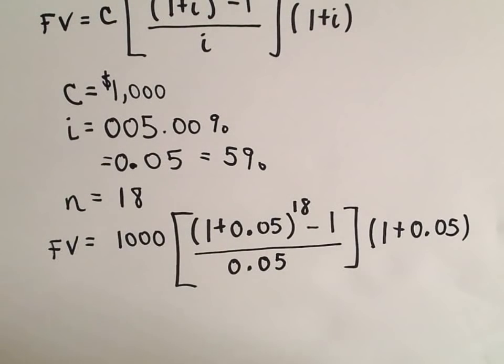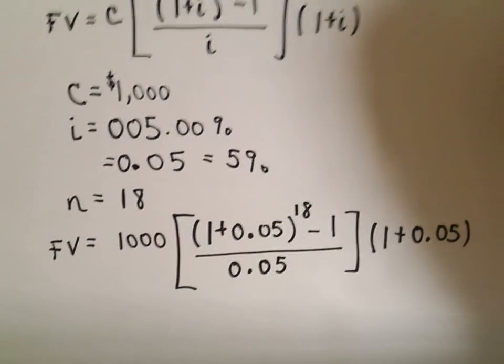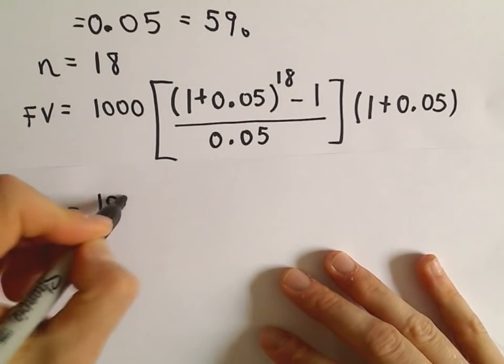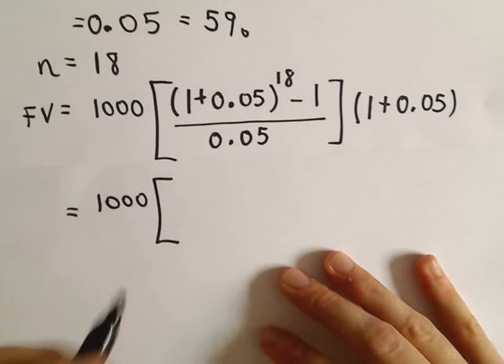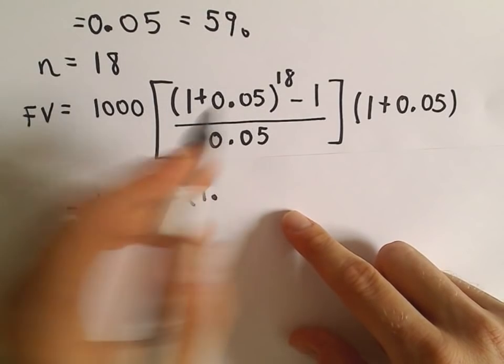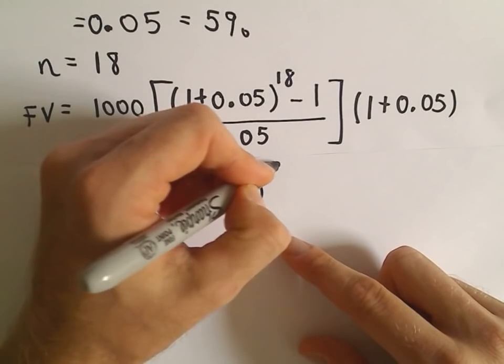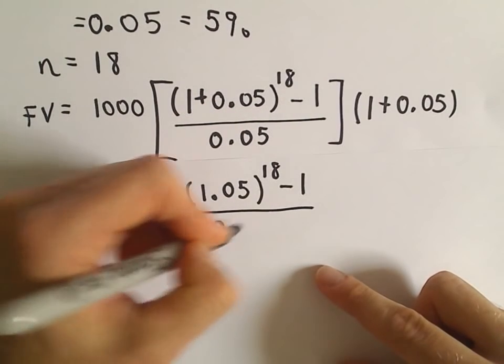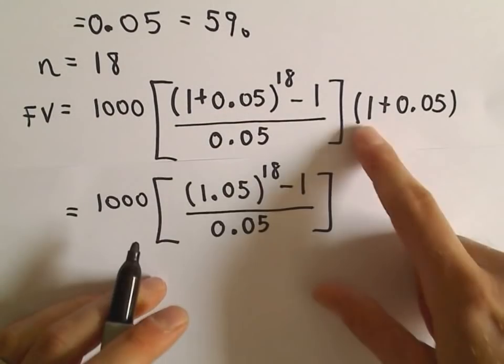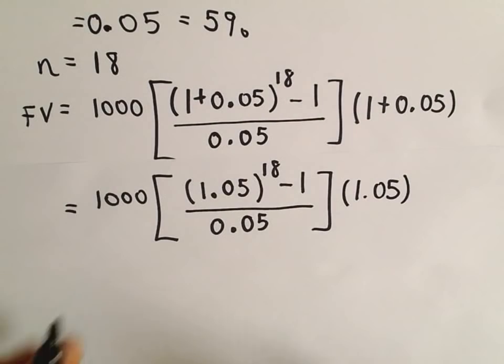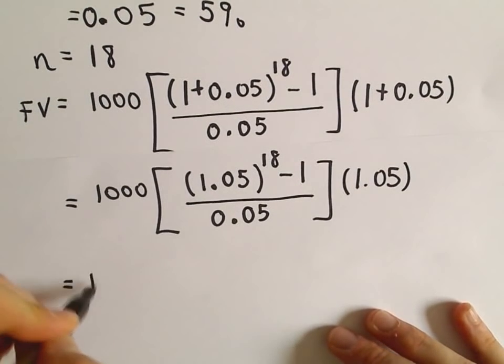So I'm going to take a few steps. If you're calculator savvy you can plug all this in pretty quickly and grind it out. I'm going to take a couple extra steps and just really make sure that I'm doing everything correctly. This is just going to be 1.05 raised to the 18th power minus 1, all over 0.05, times 1.05. And now we have to do our order of operations correctly here.